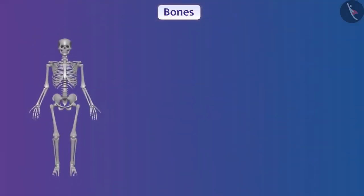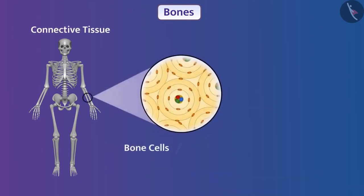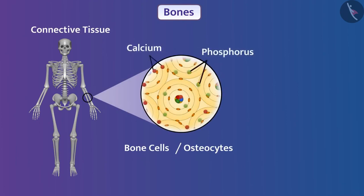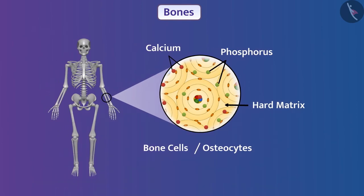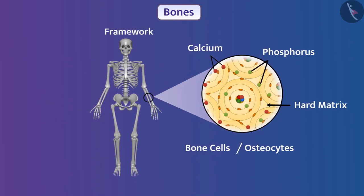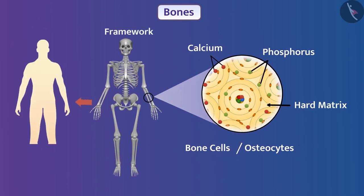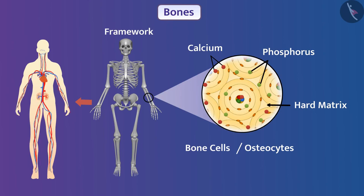Bone also connects the different organs of the body with each other, that's why bone is also a type of connective tissue. Bone cells, that are osteocytes, are embedded in a matrix composed of calcium and phosphorus. This matrix is hard, which makes this tissue hard and strong — that's why we are unable to bend the bone. The bones form a framework which provides shape to the body, provides movement to different body parts, and also provides support to muscles and main organs of the body.